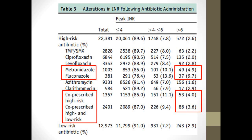When they divided results by level of INR increase — greater than 4, 4 to 6, or greater than 6 — the agents associated with an INR over 6 were metronidazole and fluconazole, with a 9.7% risk. Co-prescribing two high-risk medications, or even a high-risk and a low-risk antibiotic together, also carried a higher risk of bleeding complications and INR over 6.